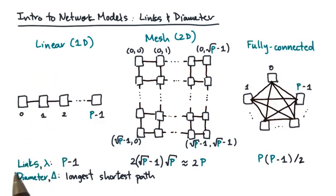For the linear network, the longest shortest path is the one that connects the endpoints. The endpoints are separated by P-1 links, therefore the diameter is P-1.